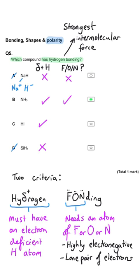Carrying on to check C, iodine is quite electronegative but not as much as fluorine, oxygen, or nitrogen. And SiH4 definitely doesn't have those three elements either. So B, NH3, is the correct answer.